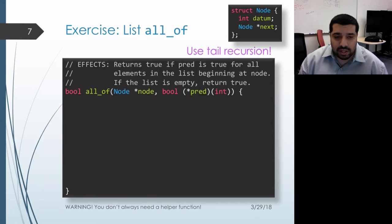On the other hand, if my list isn't empty, then I do have a node here with a datum, and that datum needs to satisfy this predicate. If it so happens that that datum doesn't satisfy that predicate, then it's not the case that all of the items in the list satisfy the predicate, and I can immediately return false.